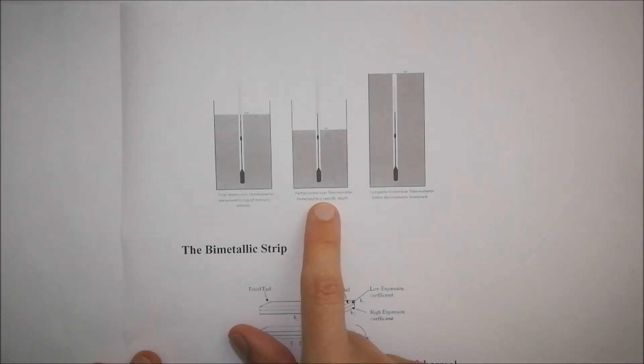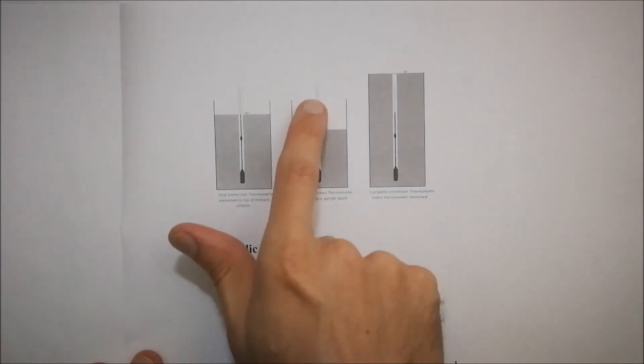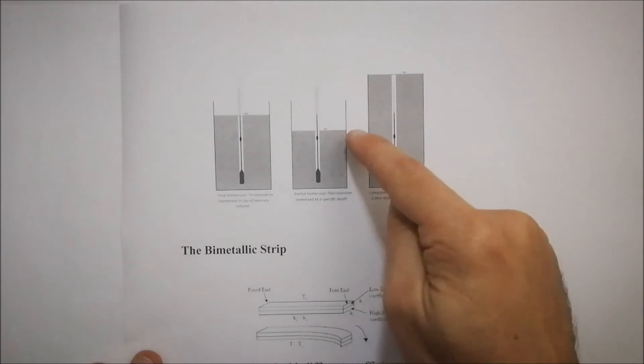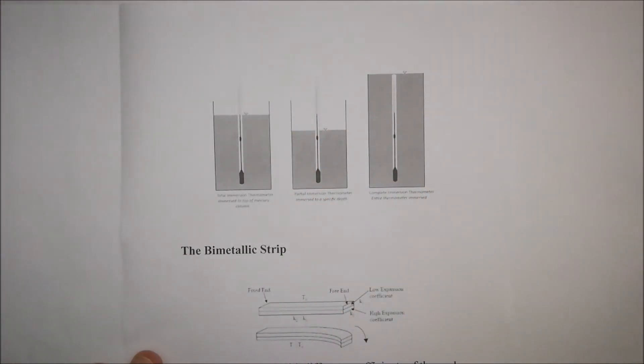Then you get a partial immersion thermometer. That would be where the indicator of what the temperature is, that's not submerged in the actual liquid that it's measuring.